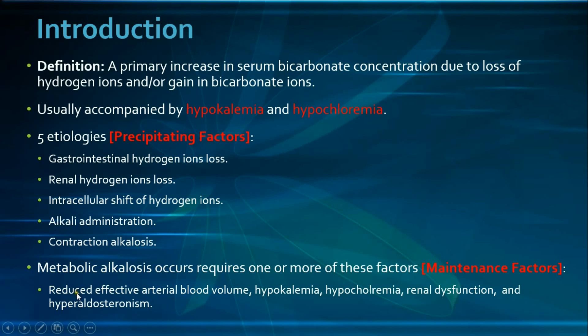For instance, reduced effective arterial blood volume will cause increased reabsorption of sodium in the proximal convoluted tubules along with bicarbonate ions, meaning decreased excretion of bicarbonate ions.